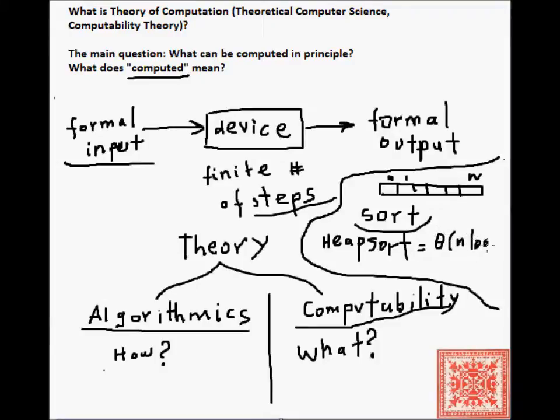Now, we can also discover that this takes theta n log n steps, where n is the length of the array. We can furthermore conclude that this is one of the optimal sorts, right? Because if we're doing comparison sorts, we cannot do better than n log n.